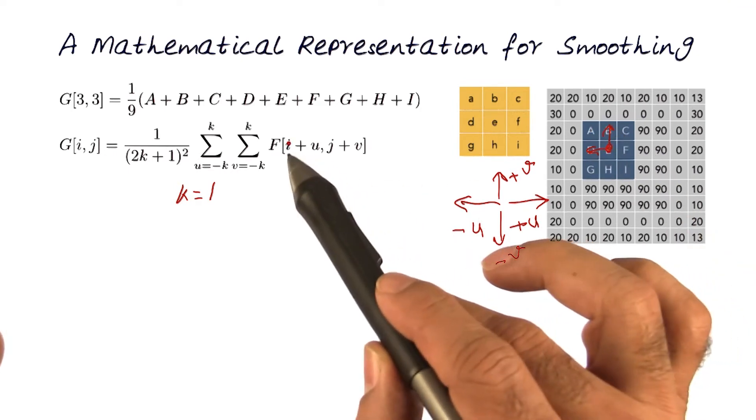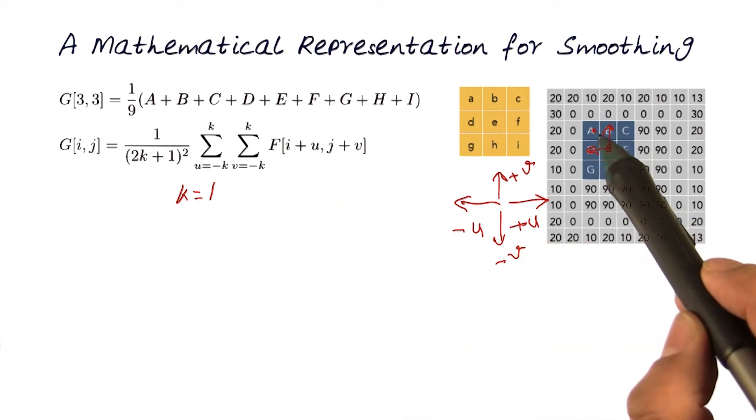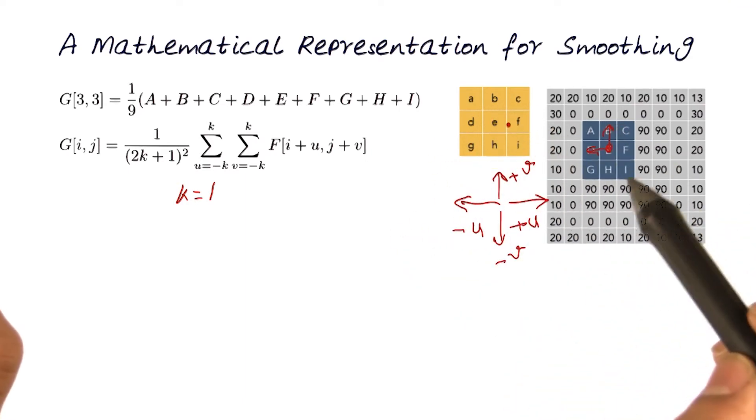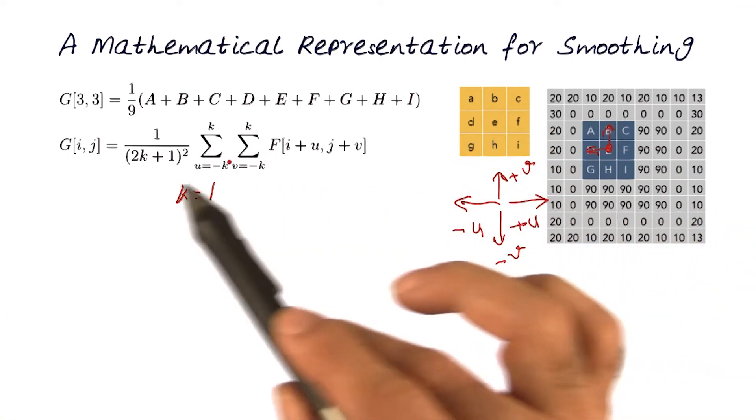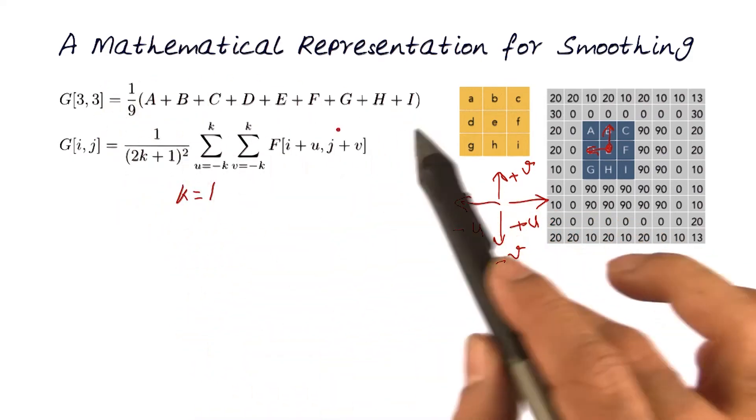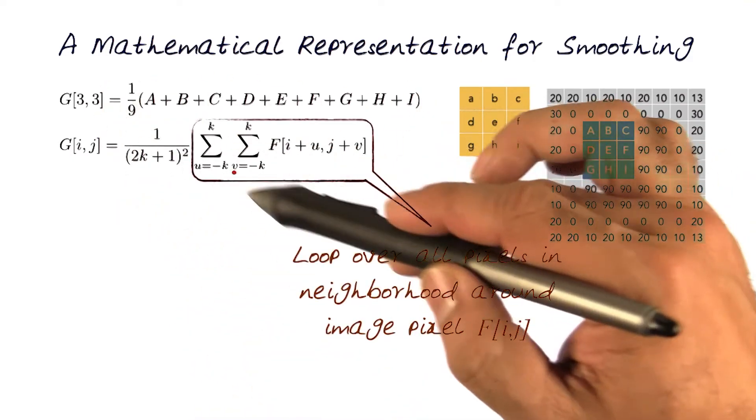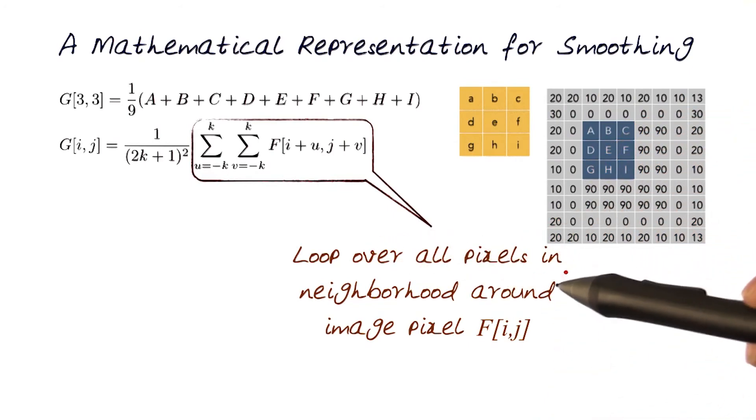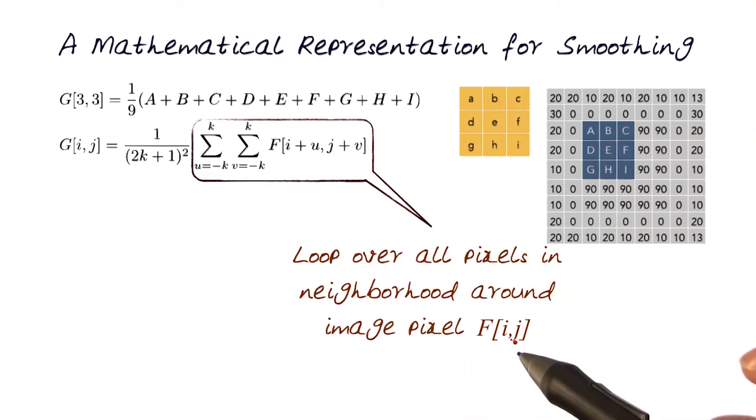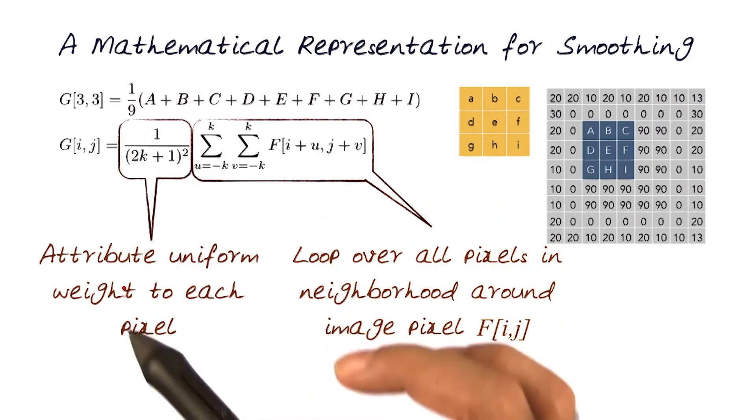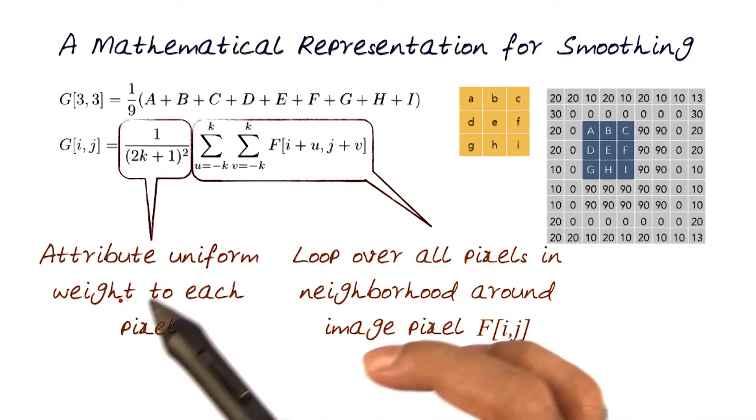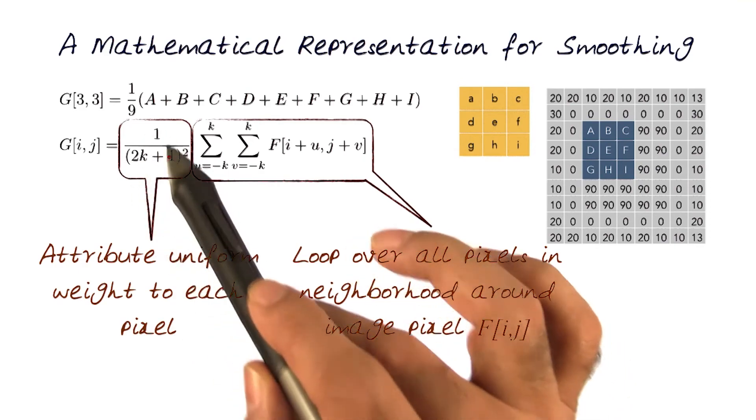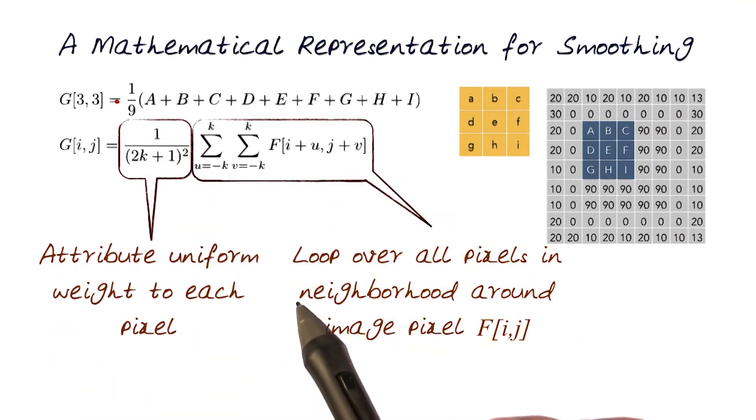The first term would be i plus u would be this element, move to this, move to this, depending on how we loop over a two dimensional array like this. This is allowing us to loop over all pixels in the neighborhood around the image pixel Fij. This attributes uniform weight on each pixel. This allows us to do normalization, like the way I did here for 1 over 9.